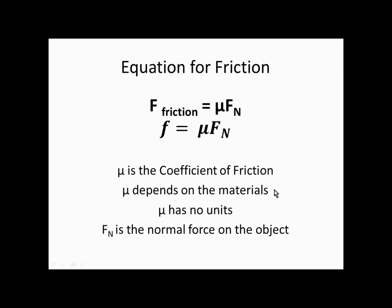Mu depends on the materials. Mu also does not have a unit, and that makes sense because we have a force on the left hand side and a force on the right hand side times mu. So we want our units to be the same on both sides, so mu has no units. In this case, f sub n is the normal force on the object.